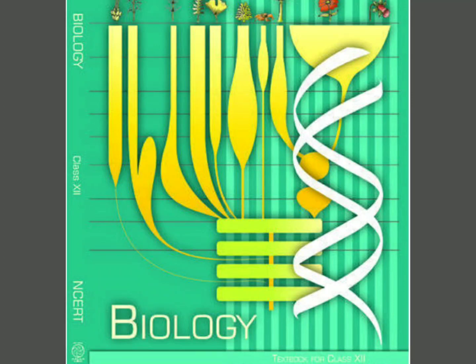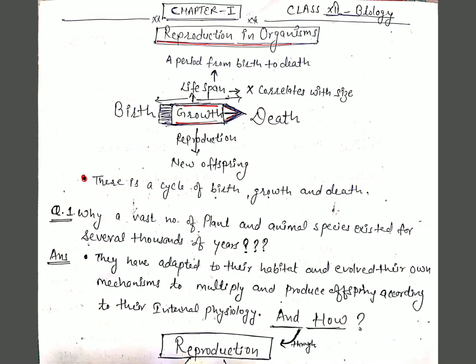Hello students, in this new series '10 Minutes Quick Revision' we will be revising the first chapter of the 12th Biology NCERT book: Reproduction in Organisms. Any organism takes birth, grows, matures, and in turn produces new offspring through reproduction, and finally dies. This cycle of birth, growth, and death spans a time period known as the lifespan, which does not correlate with the size of the organism.